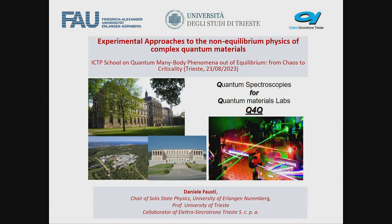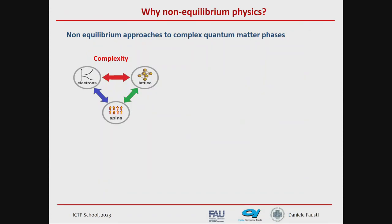Our interest is complex quantum materials — those where the macroscopic functionality is determined by the non-trivial interplay between different matter constituents, such as spin, electrons, or any kind of material degree of freedom. The interaction between these different degrees of freedom gives rise to very intricate phase diagrams. This is just one example: the phase diagram of high-temperature superconductors, where the delicate interplay between matter constituents gives rise to systems with very different functionalities, changing only by a small amount.